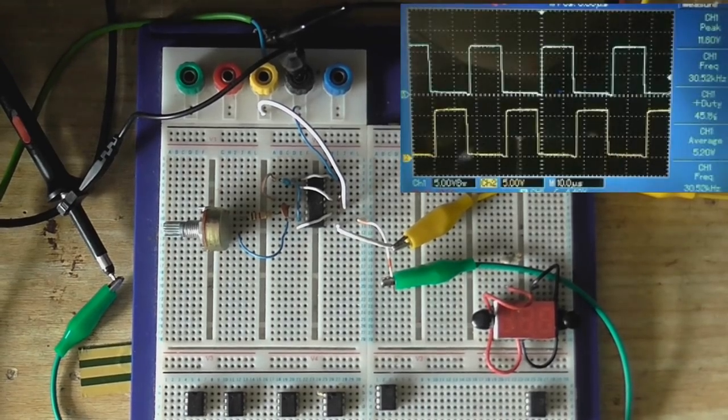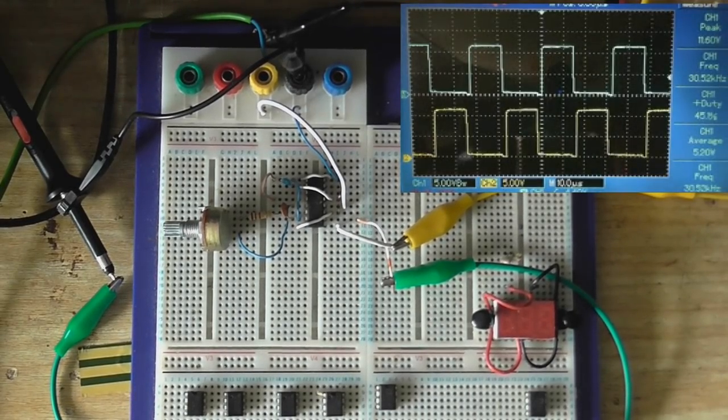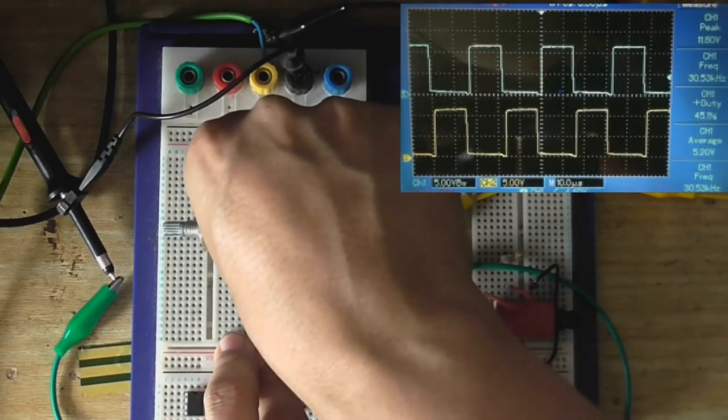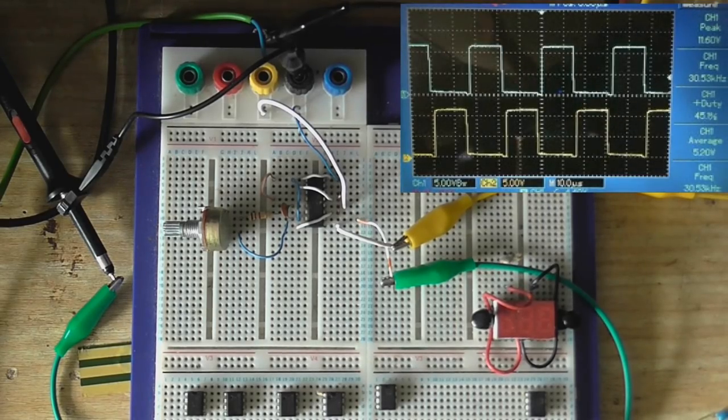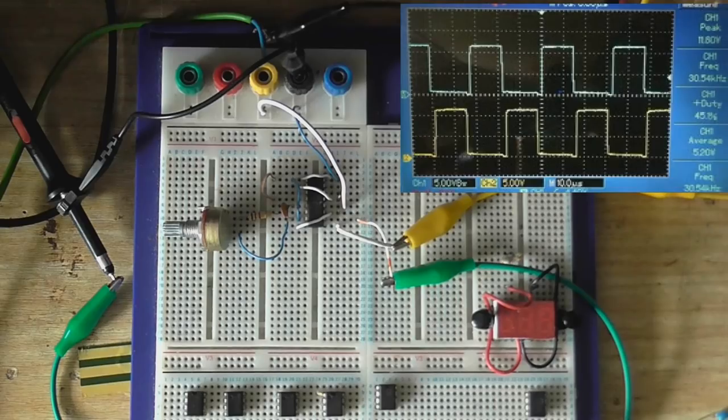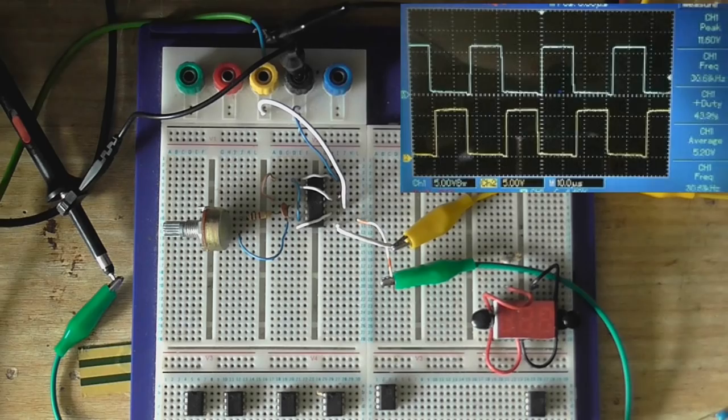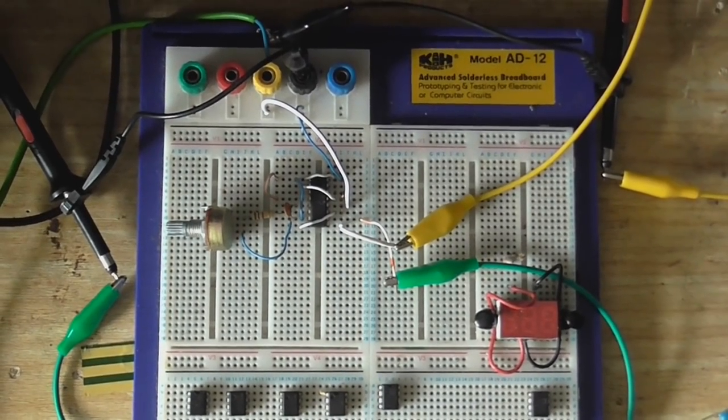As you can see, to make this chip oscillate, we need very few components. As a matter of fact, it will probably still work if I pull out this 100 nanofarad capacitor. And yes, indeed it does. So as you can see, there's just three components, and we've got ourselves a nice little square wave oscillator. You can think of these two resistors here as just one resistor. So we've got resistor, capacitor, TL494, and a couple of square waves on the output.